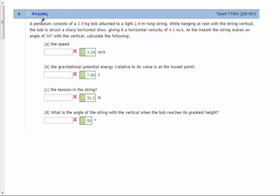This is Dr. Holt. In this video, I have a pendulum consisting of a 2.5-kilogram bob attached to a light 2.4-meter-long string. While hanging at rest with the string vertical, the bob is struck a sharp horizontal blow, giving it a horizontal velocity of 4.1 meters per second. At the instant the string makes an angle of 30 degrees with the vertical, calculate the following.